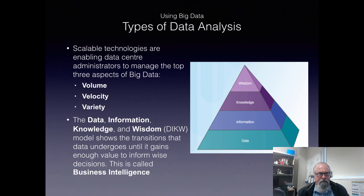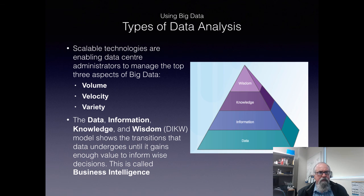We have multiple types of data analysis we can use. Our scalable technologies are enabling data centres to manage the top three aspects of big data: volume, velocity — how fast it's coming in — and variety, including different types such as video, numerical, real-time, and text-based. The Data, Information, Knowledge, and Wisdom (DIKW) model shows the transition data undergoes until it gains enough value to inform wise decisions — this is business intelligence, a term we see thrown around a lot nowadays.